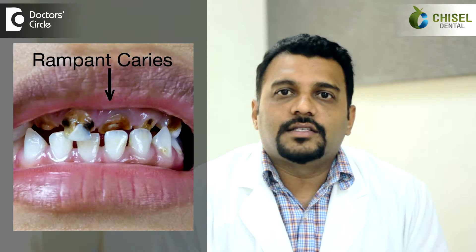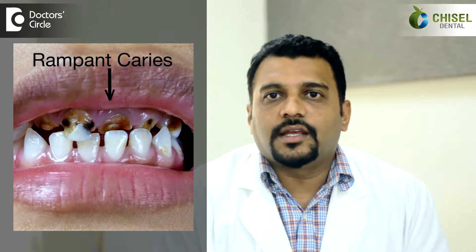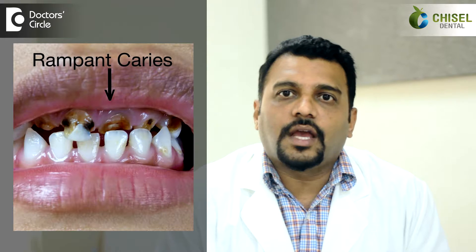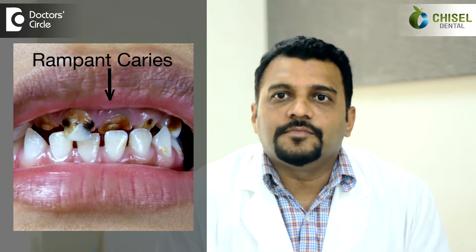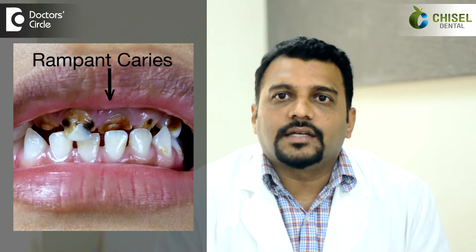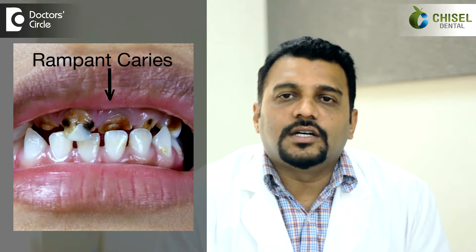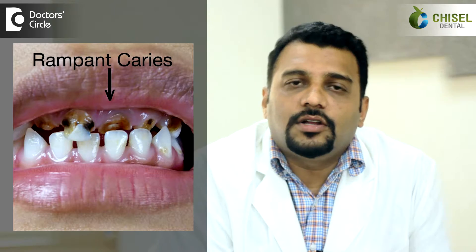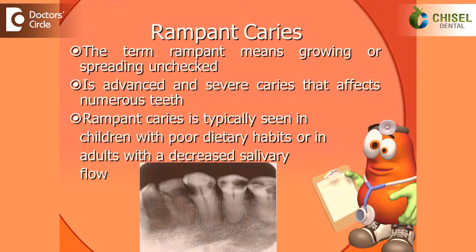Rampant caries is defined as suddenly appearing, widespread, rapidly burrowing type of caries, which causes early involvement of the pulp. What is the main etiology or cause of rampant caries?